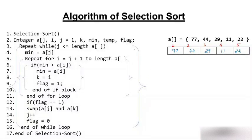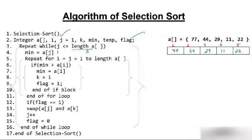Let's trace the algorithm. We call a function, create a variable, and enter a while loop where j is less than the length of the array — which is 5. So j moves from 1 to 5. The current value of j is 1. We set minimum equal to a[j], which is a[1] = 77.